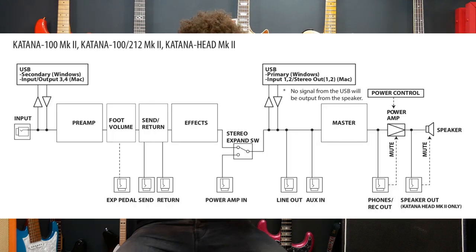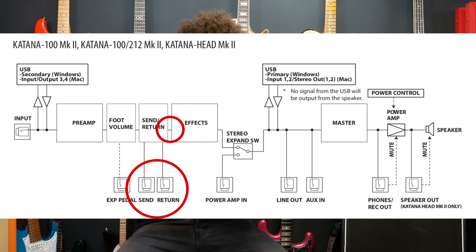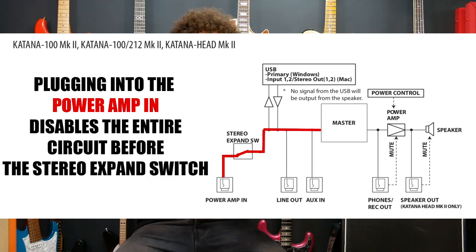Some people have asked what's the difference between the direct power amp in and the return of the effects loop. As far as I can see, according to the diagram in the manual, the send/return comes before the effects, and the power amp in comes after the effects. So the direct power amp in is one step closer to the power amp and it doesn't get processed by any of the effects.